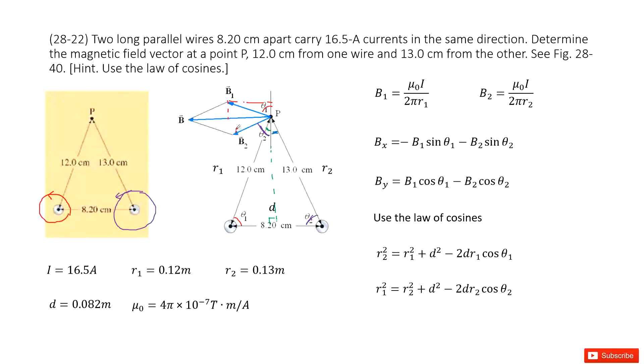And then look at B2. So B2 is negative B2 sin theta 2, right? Similarly, for the y components: By is B1 cos theta 1 and B2 cos theta 2. Agree?